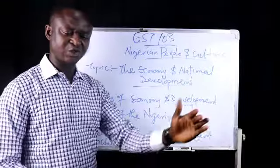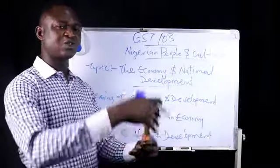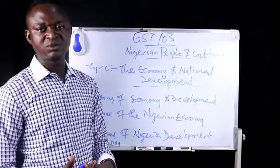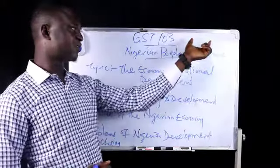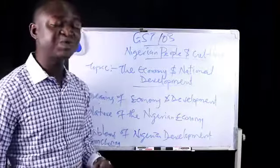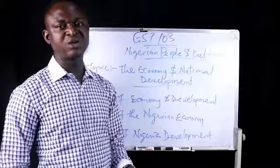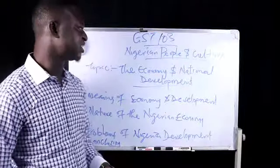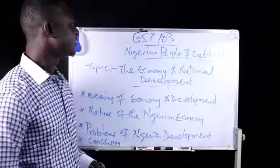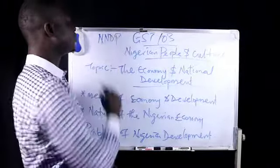All these colonial constitutions, the changes in the constitution, were as a result of the challenges identified in the previous constitution. Of unique importance is the Clifford constitution of 1922 that, for the first time, made fruition for the elective principle where Nigerians were given room to participate in elections, thereby leading to the formation of the first political party in the history of Nigeria, formed by Sir Herbert Macaulay in 1923 — the Nigerian National Democratic Party, NNDP.